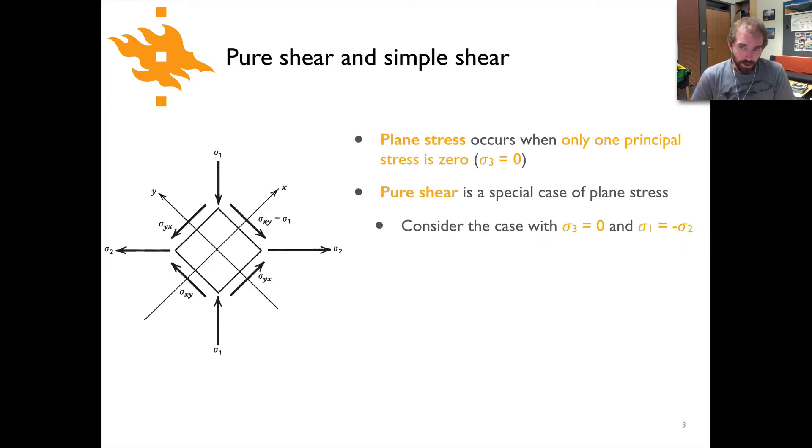Now it turns out that pure shear is a special case of what's called plane stress, and plane stress applies when only one of the principal stresses is zero. In this case there would be sigma one and sigma two that are some non-zero value and sigma three is equal to zero. Pure shear is a special case of that plane stress scenario. We'll look here at an example where we set sigma three equal to zero and have sigma one equal to minus sigma two, as shown in the figure over here on the left side.